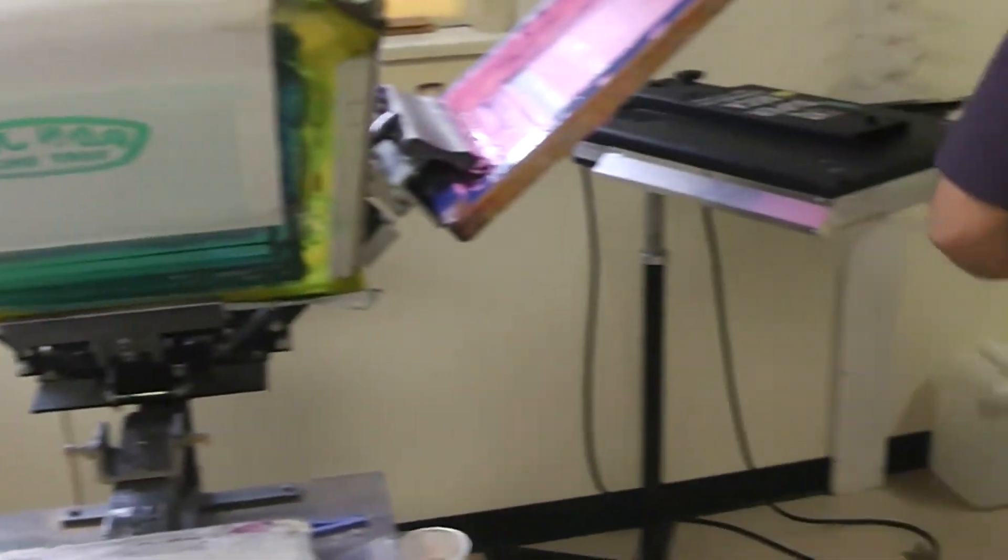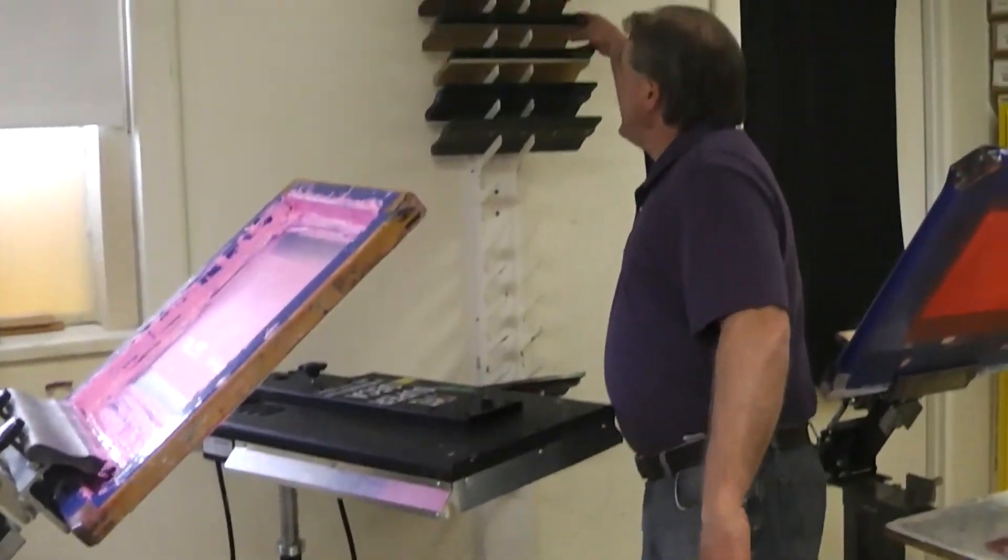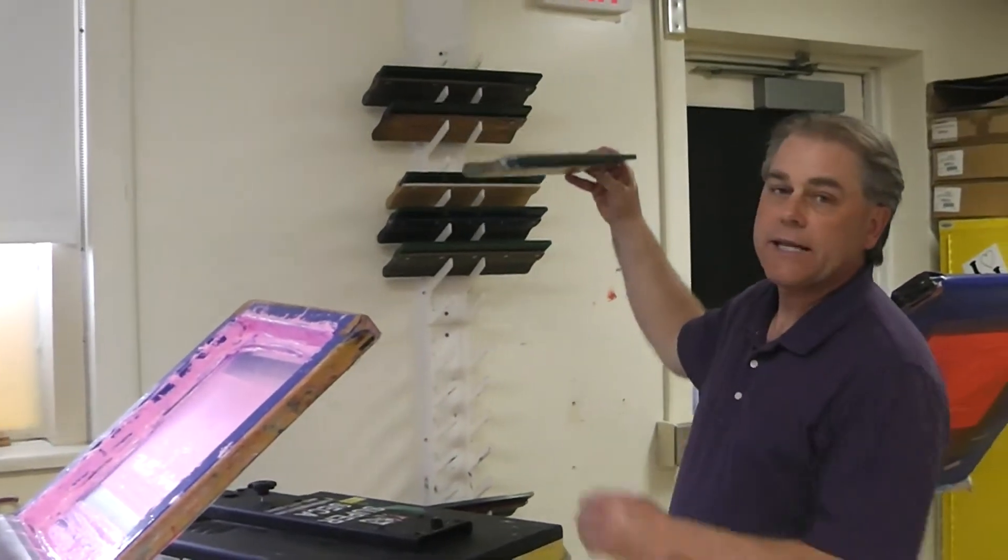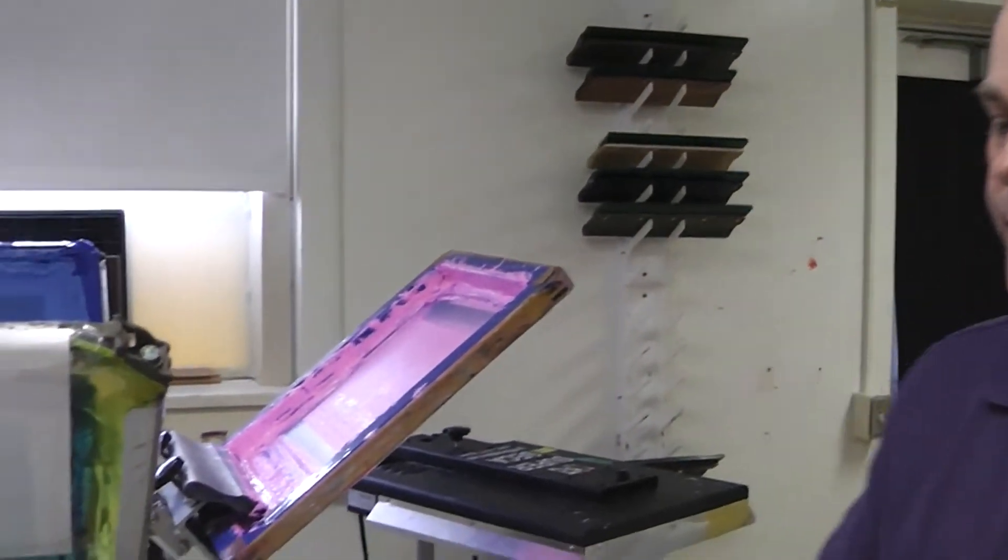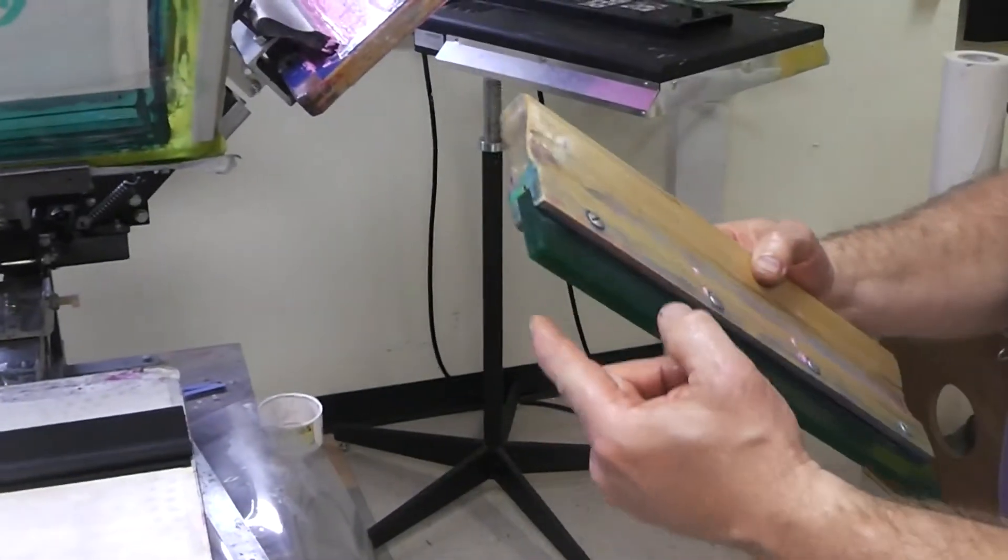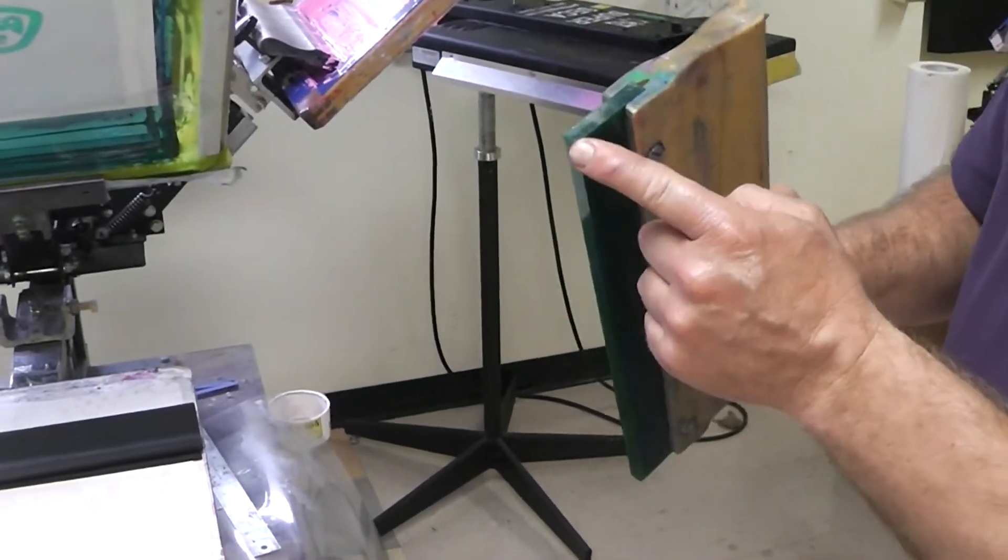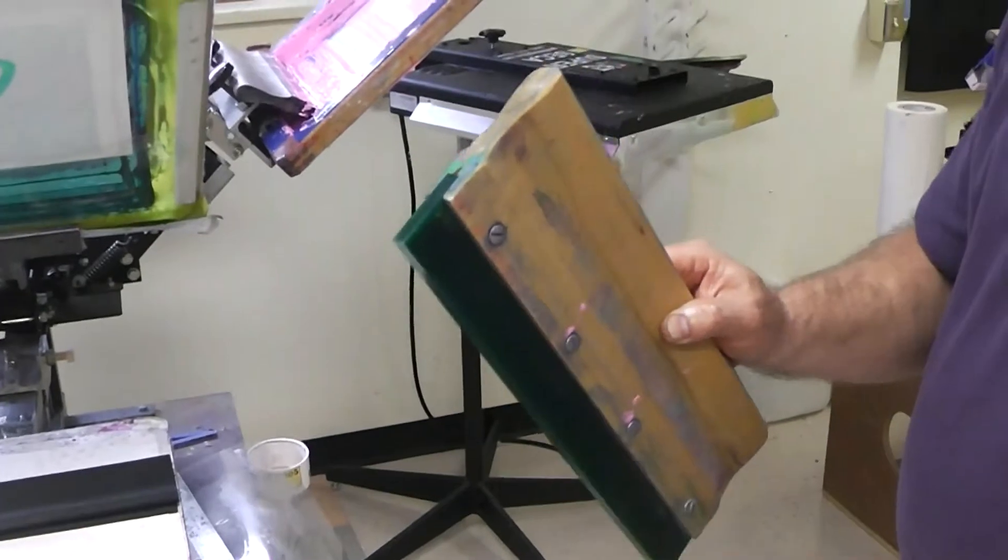I'm going to grab a squeegee. I've got to get a squeegee wide enough to cover my stencil. That's our goal. So the squeegee is a wooden handle with a synthetic blade. The blade has a nice sharp edge on it to push the ink shear through the stencil.